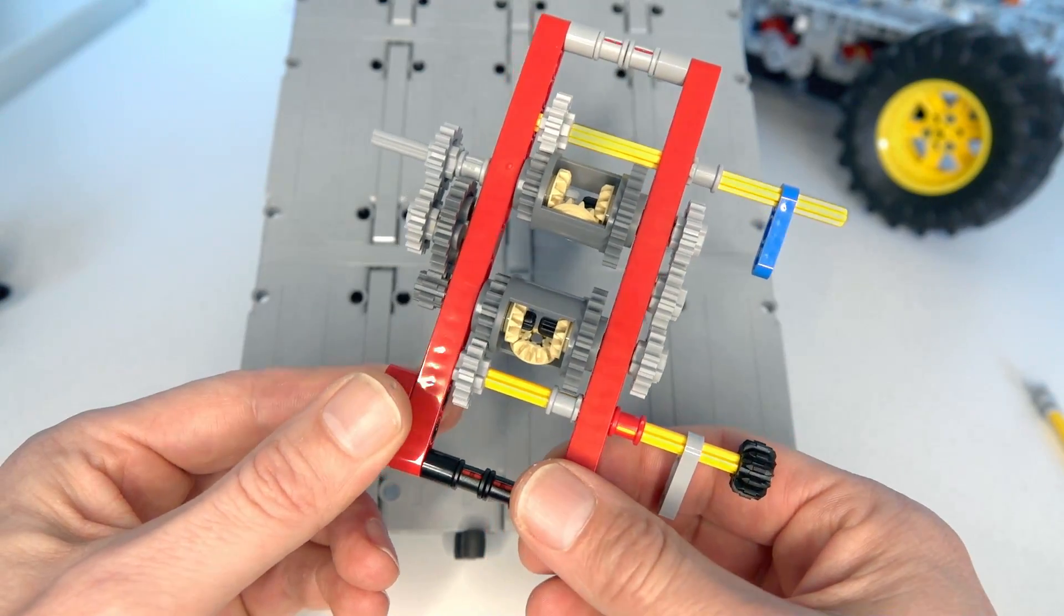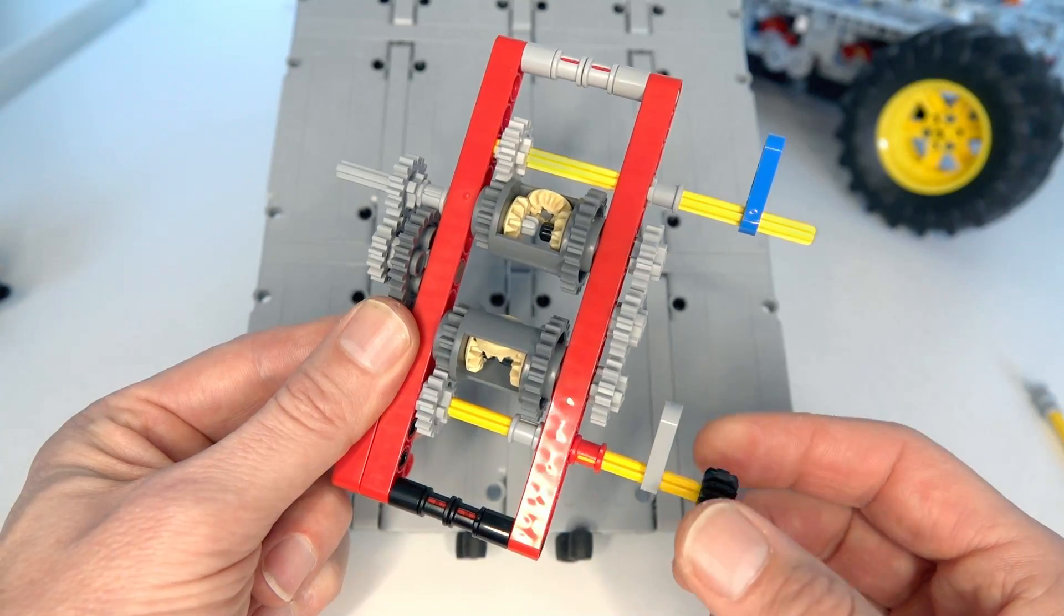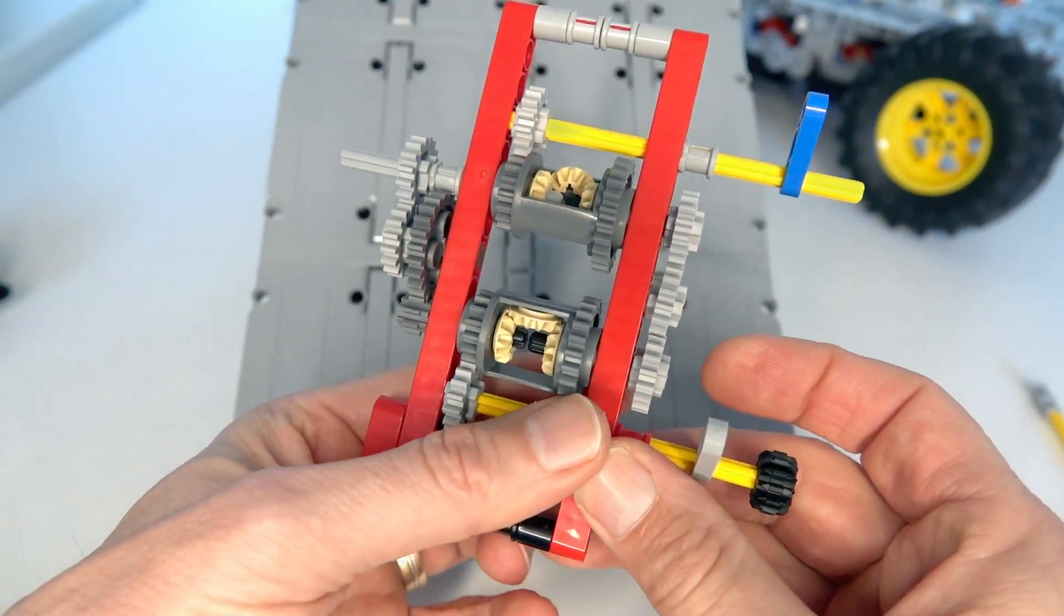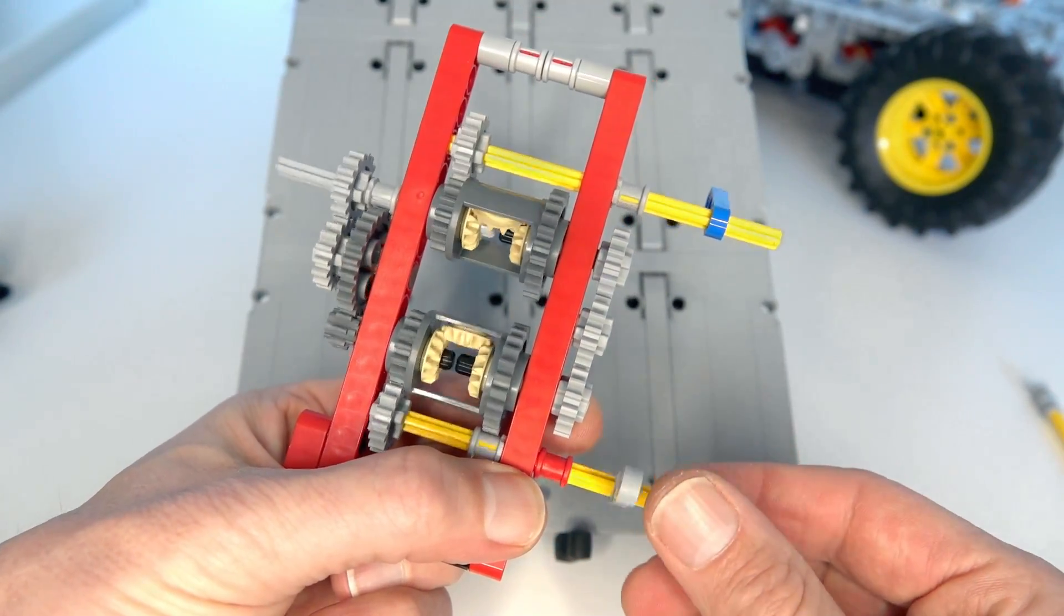However if we for example hold still the left path which is the 1 to 3 then it's forced to use the right path and the output ratio is simply a 1 to 1. And on the other hand if we hold down the 1 to 1 path and rotate then the output gearing is a 1 to 3.